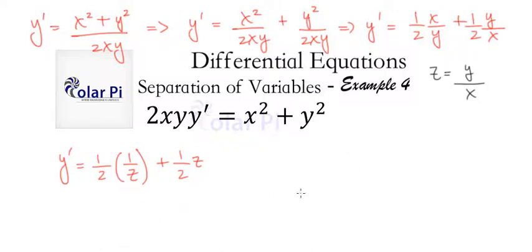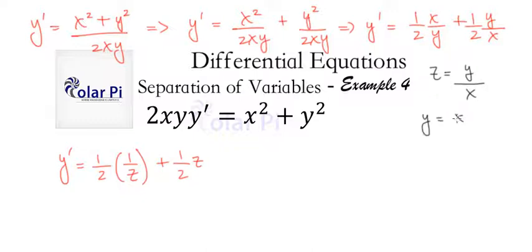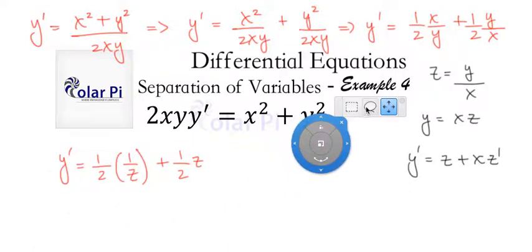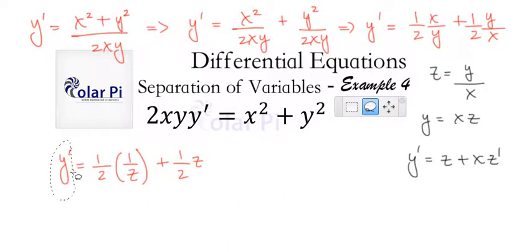Since y equals x times z, by the product rule y' equals 1 times z plus x times z'. So y' equals z plus x·z'. We now need to replace y' with this expression.